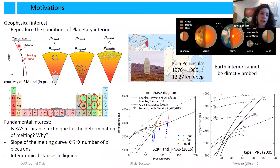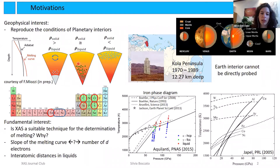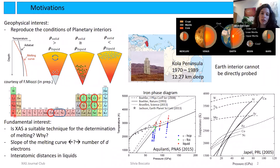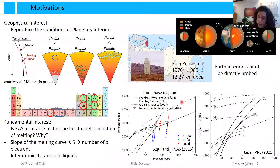Why the phase diagram, and specifically why the melting curve? If we manage to measure the melting curve of the composing materials of the core, and if we can determine the properties of the liquid, we can, for example, determine the crystallization regime of a planetary core. There is not only a geophysical interest in this work but also a fundamental interest, such as whether XAS is a suitable technique to determine melting and why.